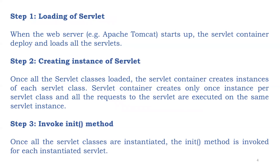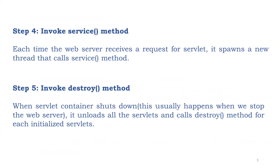When loading the Servlet, when the web server starts up, the Servlet container will deploy and load all the Servlets. Step two is creating an instance of the Servlet — once the Servlet classes are loaded, the Servlet container will create the instance for each Servlet class. After the instance is created, the init method will be invoked. Then after initializing, each time the web server receives a request, it will call the service method for producing the response. When all requests are processed and we go for a shutdown, we will be unloading all the Servlets and calling the destroy method for each initialized Servlet.